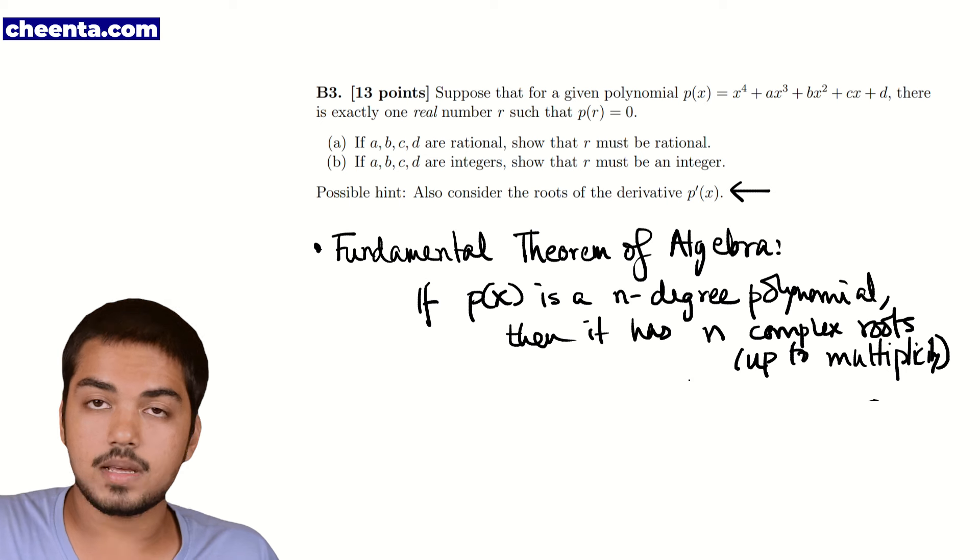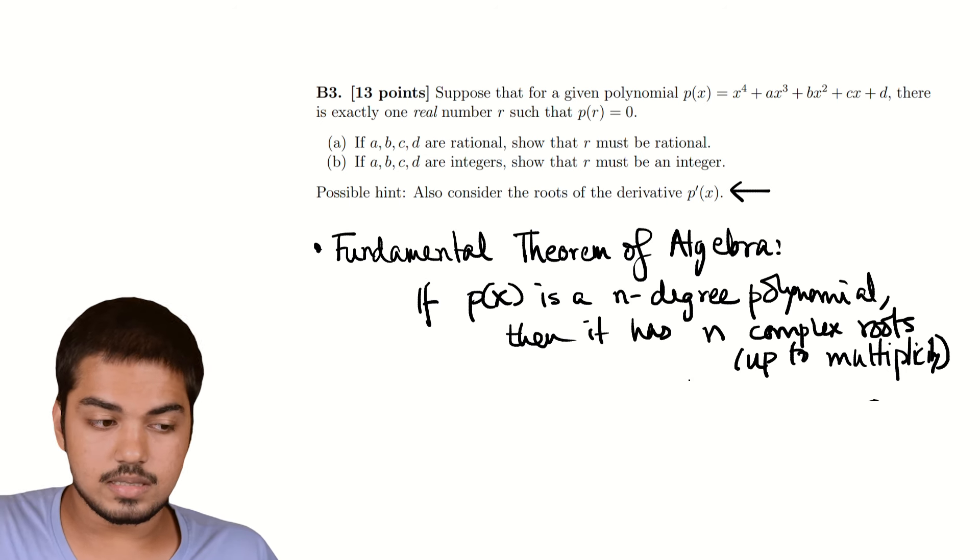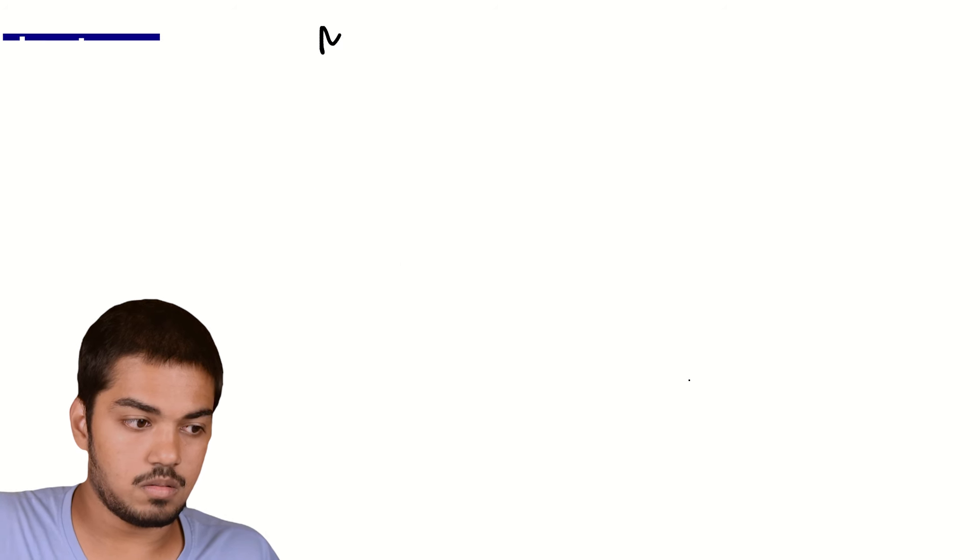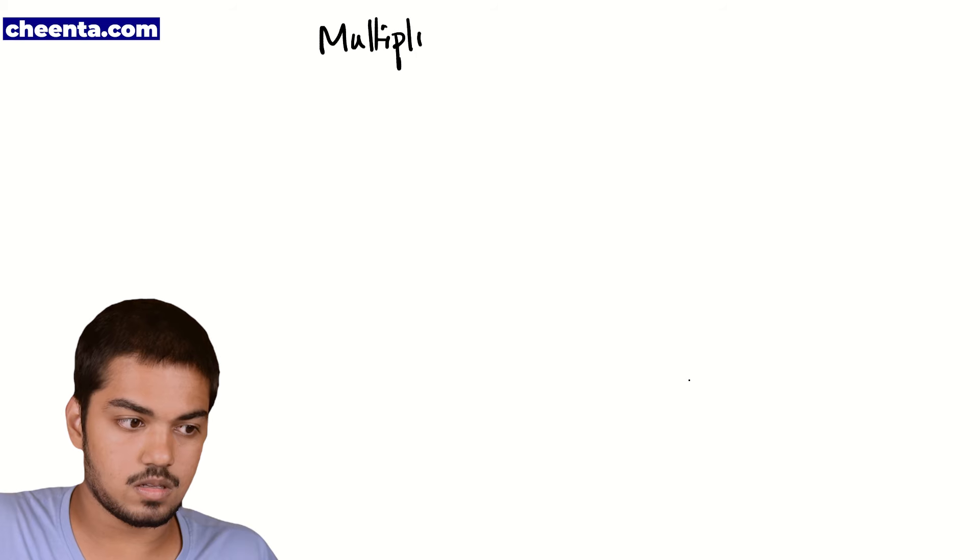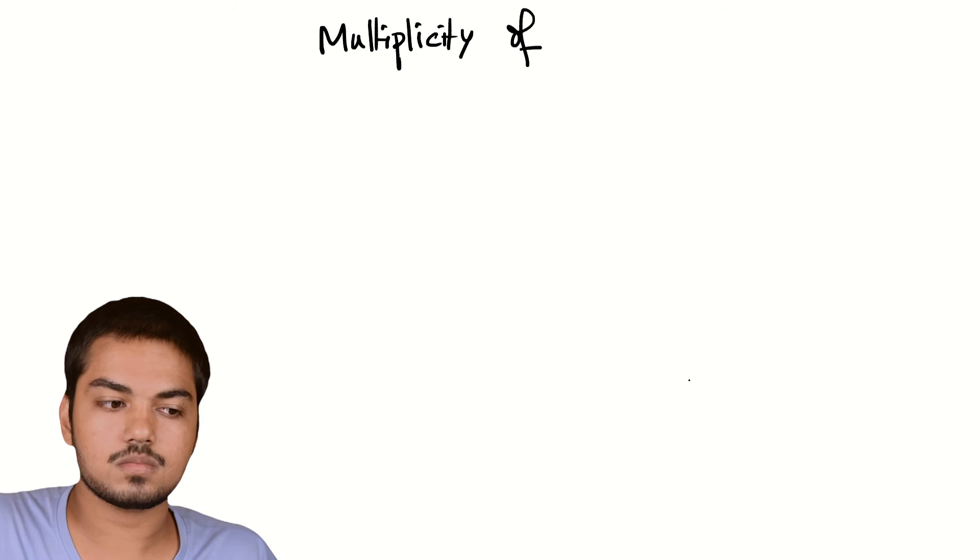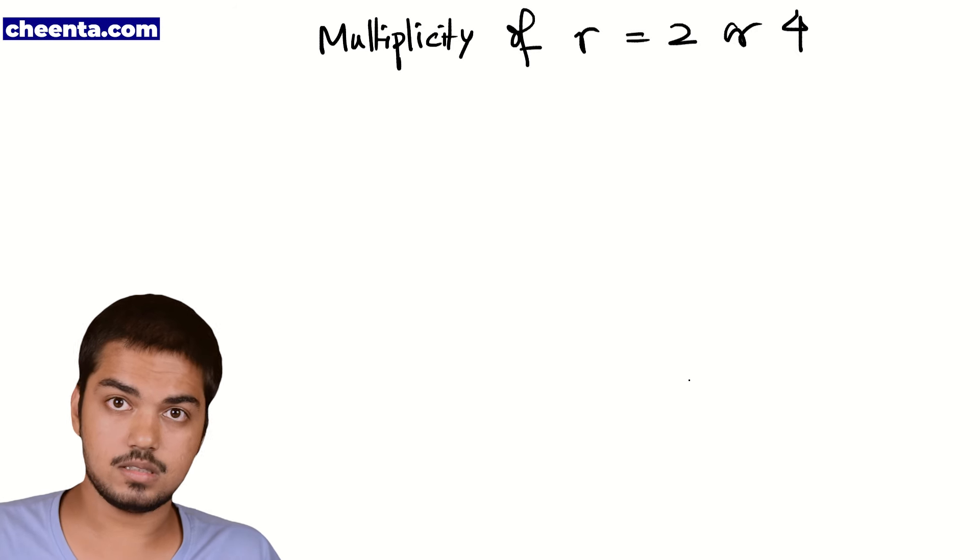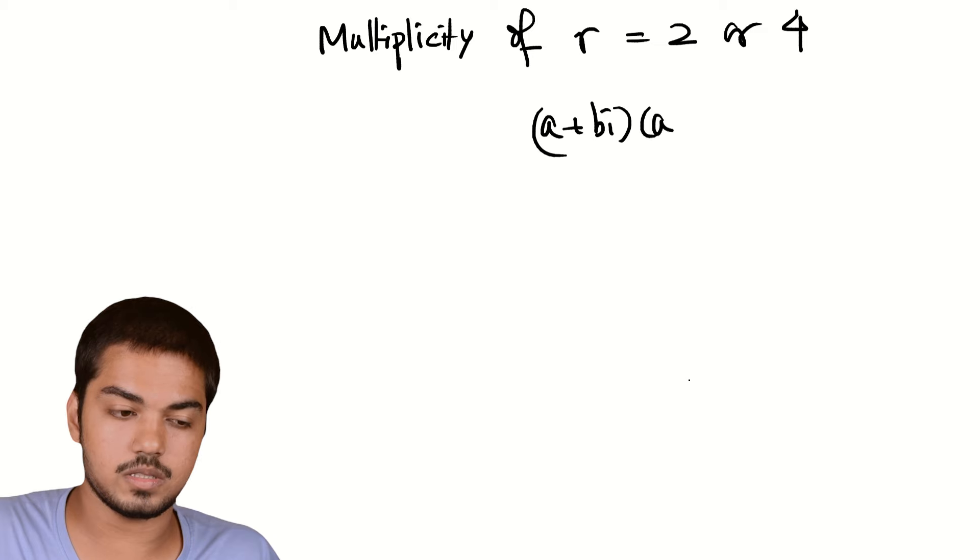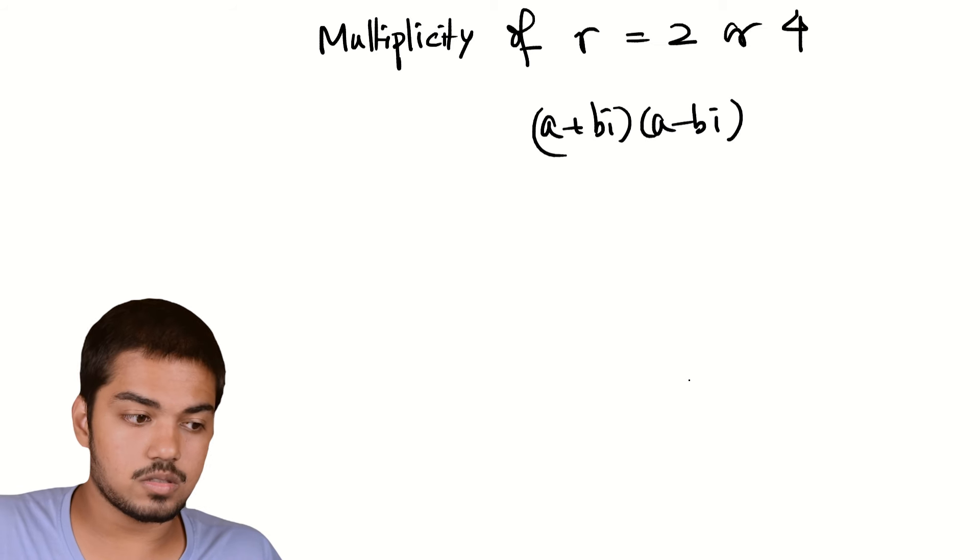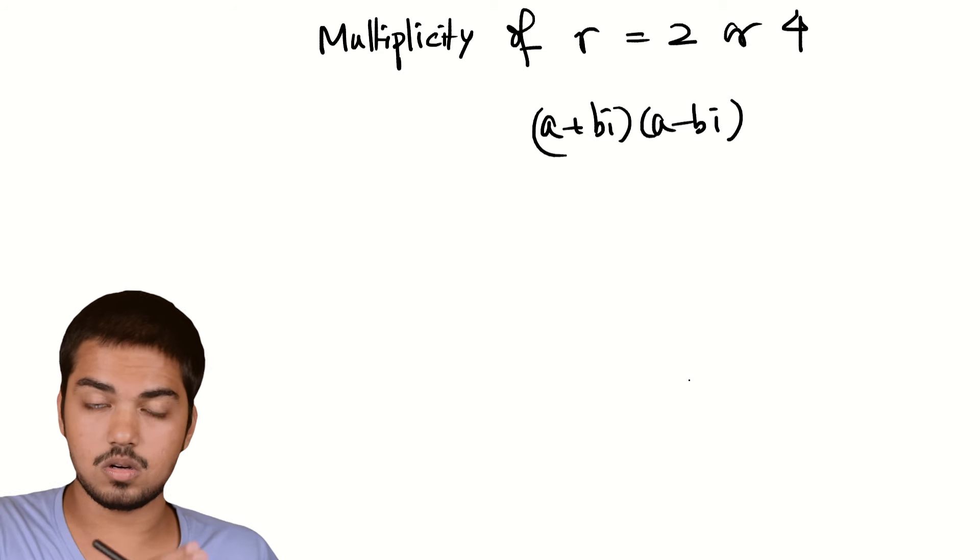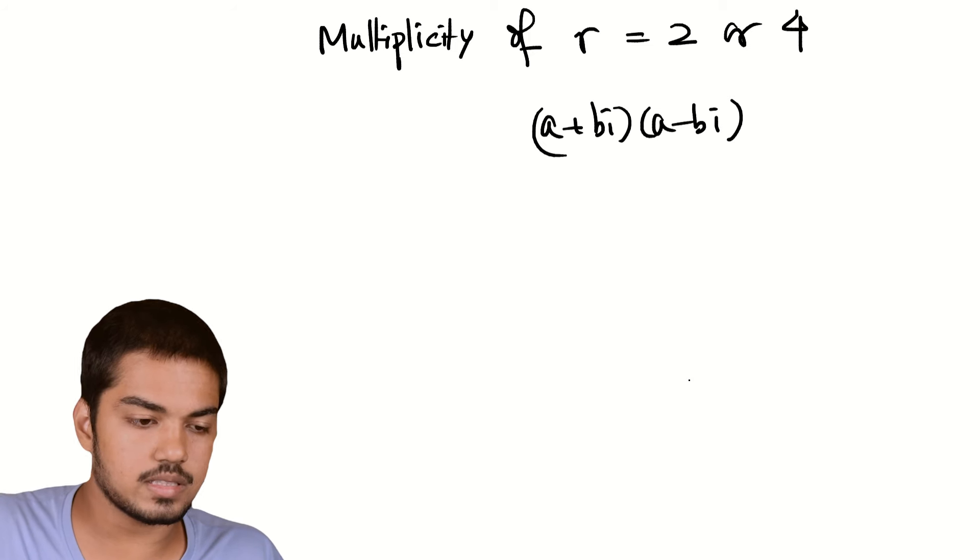Now, let's see what this means for our result. Since all complex roots must come in conjugate pairs, what this means is that the multiplicity of this real root r is even. So, the multiplicity of r is either 2 or 4. Right? Because complex conjugate, complex roots come in conjugate pairs. And so, if a + bi is the root, a - bi will also be a root. And they come in pairs. And so, since the degree of the polynomial is even, and we have only one real root, it must occur an even number of times. Okay, we can break this into two cases.